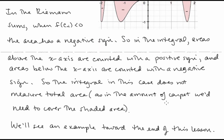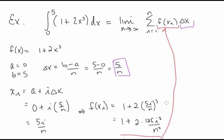Looking at an example: we have the definite integral from 0 to 5 of 1 plus 2x to the third, dx. Using the simpler form of the definition, we have the limit as n goes to infinity of the summation i from 1 to n of f of x i delta x. The first thing we need is delta x. Here b equals 5 and a equals 0, so delta x equals b minus a over n, which is 5 over n.